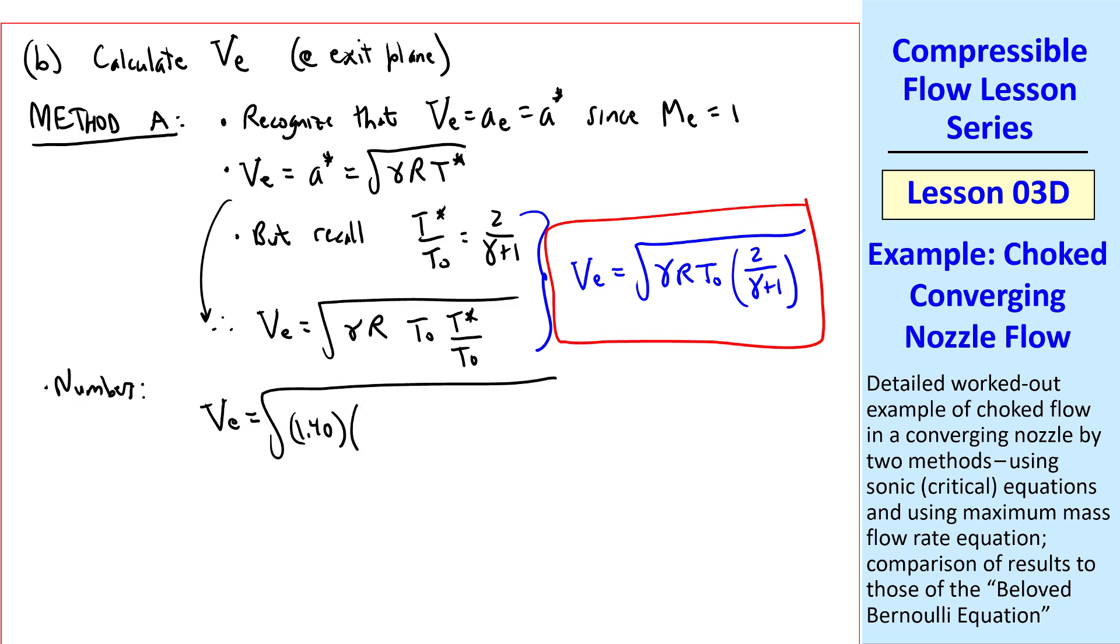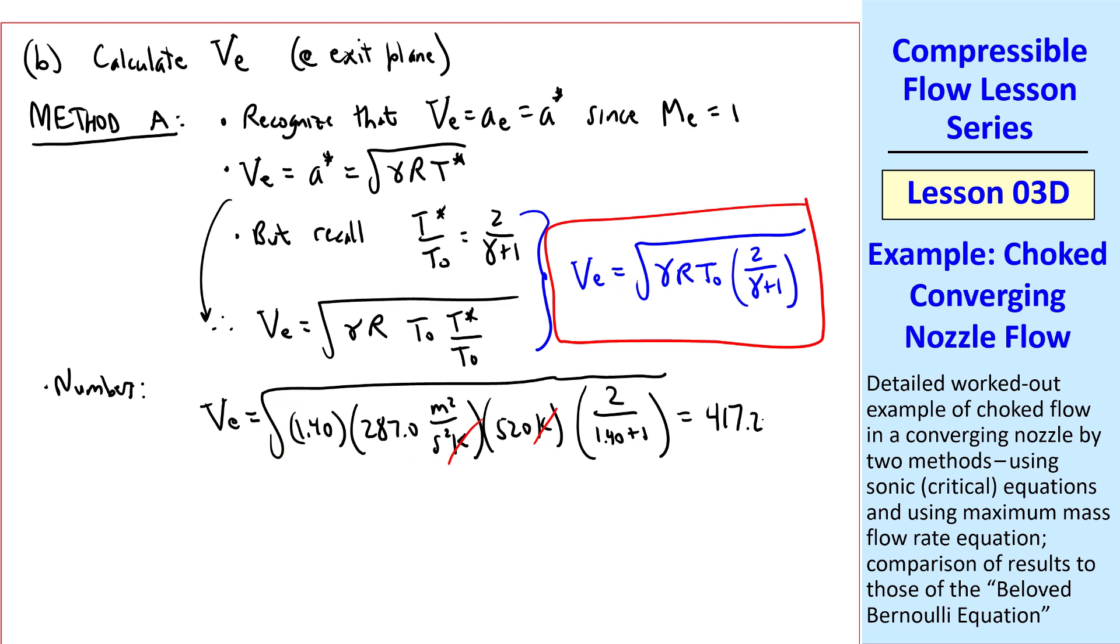Putting the numbers in, gamma, R for air, T0, and 2 over gamma plus 1, all under the square root. Ks cancel, and we have meters squared per second squared under the square root, so we get 417.27 meters per second. The answer to three digits is thus 417 meters per second.